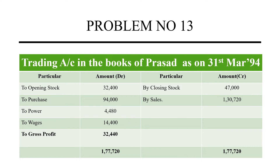And sales — sales is the price, the money that comes inside, so that is credit side. Sales is $130,720 and closing stock is $47,000. The credit side total we are getting is $177,720. We take out the balancing figure and we are getting $32,440, so the total will be $177,720.